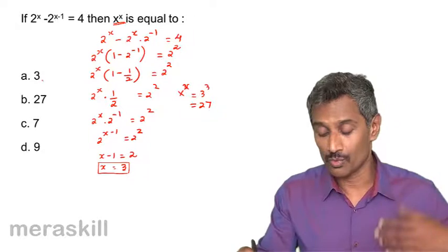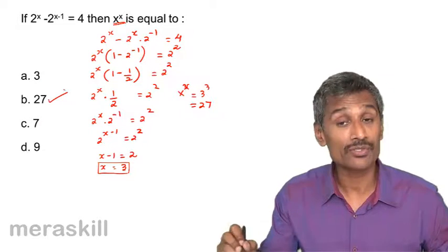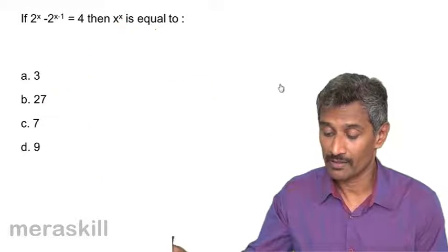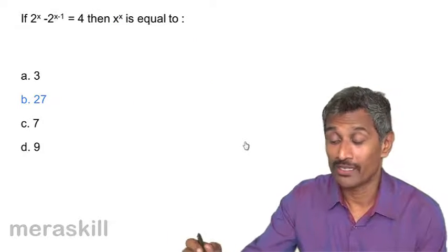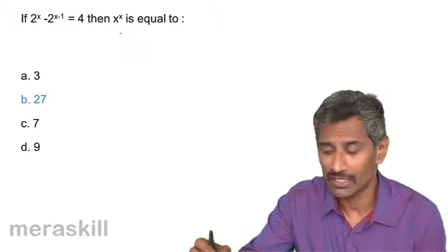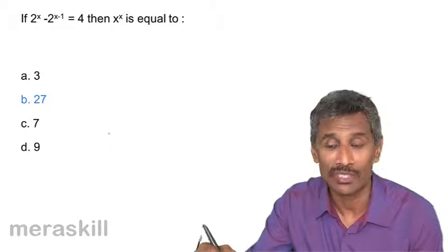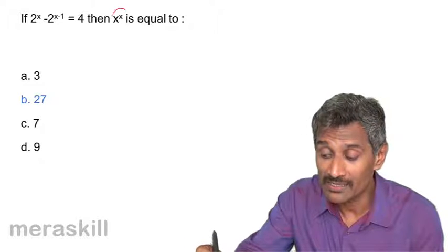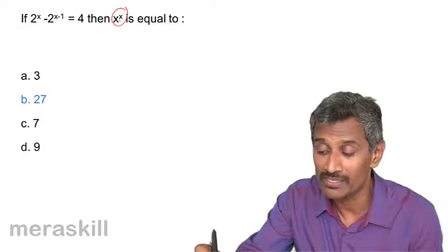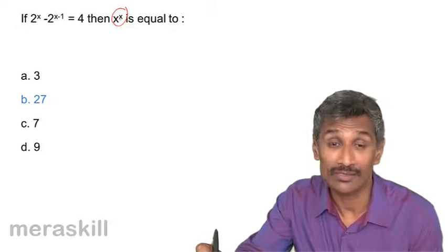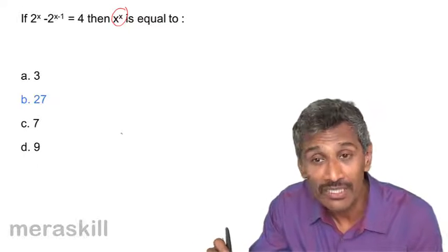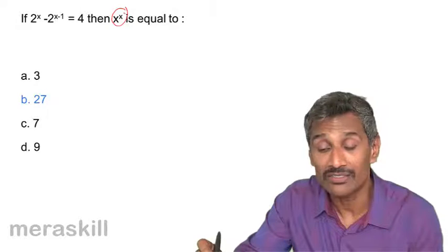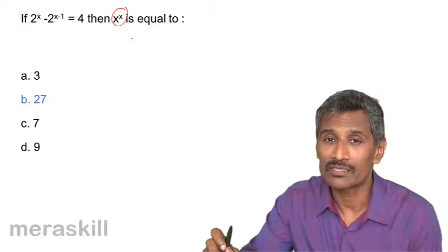Among the options — 3, 27, 7, 9 — our answer is 27. Note: be extra careful here because most candidates, after solving x equals 3, tend to immediately mark 3 as the answer. But the question asks for x raised to x, not x. Get into the habit of reading the question again once you get the answer — the required answer is 3 raised to 3, which is 27, not 3.